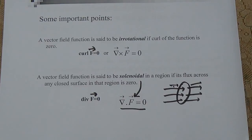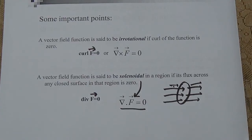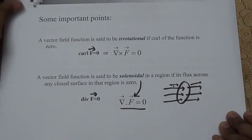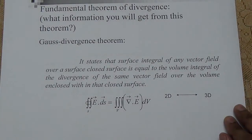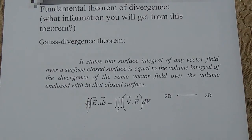So there are two more scientific terms here in the context of these operators. When curl F equals zero, the field is irrotational. When divergence F equals zero, the field is known as solenoidal. The next point will be about two basic theorems — the divergence theorem.